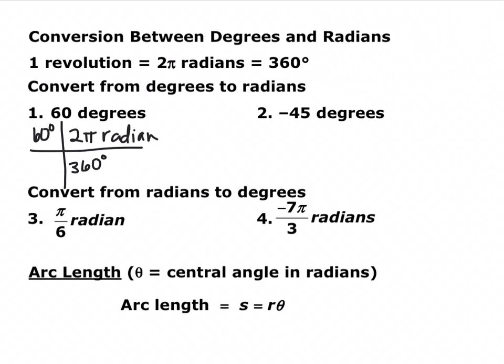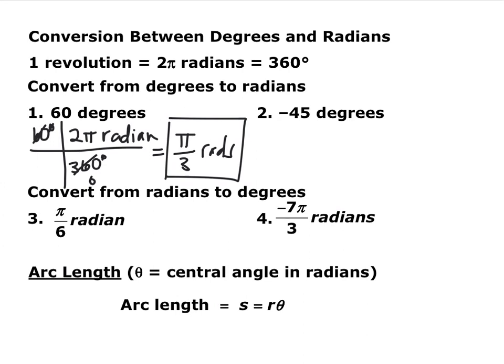Remember this conversion: 2π radians equals 360 degrees. Go ahead and pause the video and convert negative 45 degrees into radians, and then convert π/6 and negative 7π/3 radians into degrees.